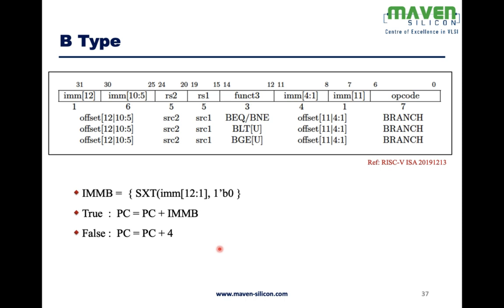The RISC-V processor has a special register called the program counter. Normally, the PC increments sequentially as PC = PC + 4, because it uses byte addressing, so addresses go 0, 4, 8, and so on. But for branch instructions, based on the offset defined by the immediate value, the PC becomes PC plus immediate value — enabling non-sequential order execution.